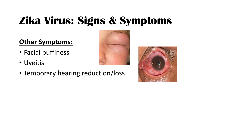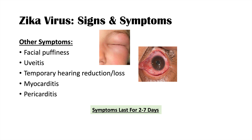Other symptoms include facial puffiness, uveitis, and temporary hearing reduction or hearing loss. Myocarditis — inflammation of the heart muscle — and pericarditis — inflammation of the pericardial lining — can occur less commonly. Symptoms typically last about two to seven days. The combination of fever, rash, and temporary hearing loss should raise suspicion for Zika virus.